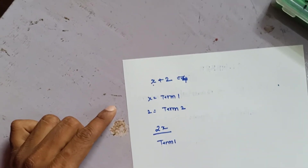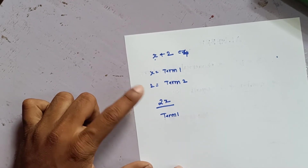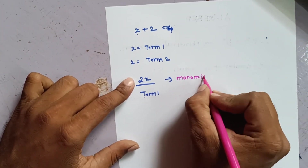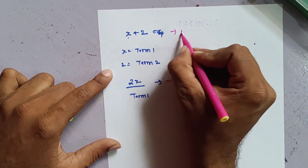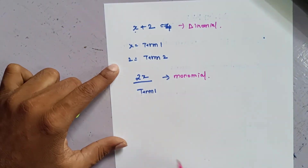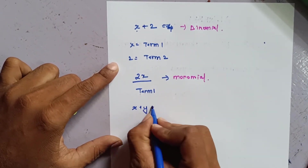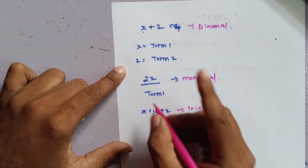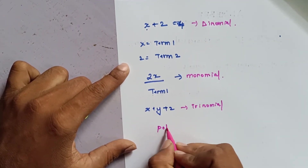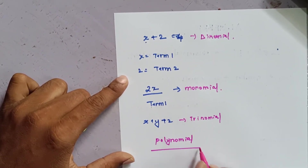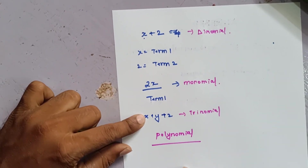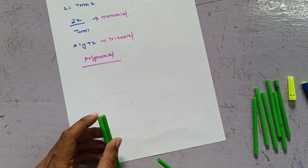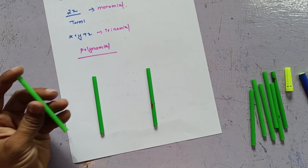Depending on the number of terms, equations are given different names. If I have one term, it is called a monomial. If I have two terms, it is called a binomial. Three terms — like x plus y plus 2 — is called a trinomial. All of these together are generally called a polynomial, which has a variable and a constant.